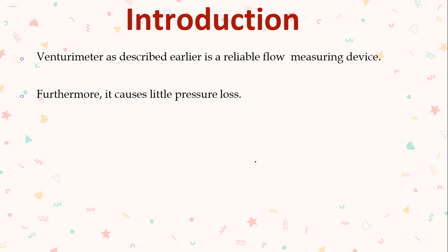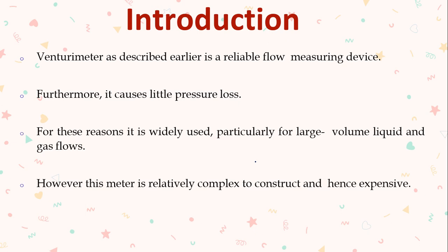Both venturi meter and orifice meter calculate discharge or rate of flow. A venturi meter has three components: convergent, divergent, and throat. It is useful for large volumes of fluid — when there is a lot of discharge, we use a venturi meter. When discharge is comparatively less, we adopt an orifice meter. Also, the venturi meter is a little complex in construction; even though it has fewer losses, it has maintenance issues and is more expensive than the orifice meter.